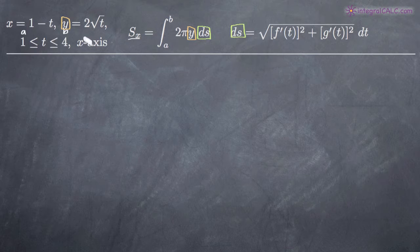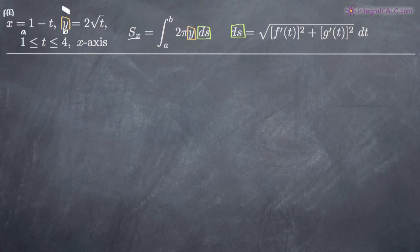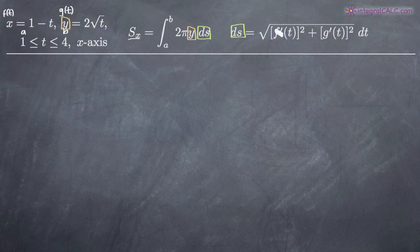Keep in mind that in the ds formula we've got f prime of t and g prime of t. When dealing with parametric equations, people will often use these interchangeably, but we've been given equations in terms of x and y. The equation for x is f of t, and the equation for y is g of t. So when they say f prime of t and g prime of t, it means the derivatives of those two equations.